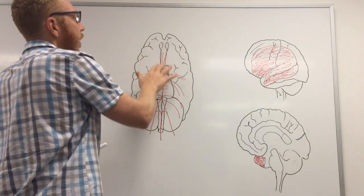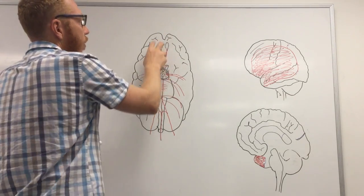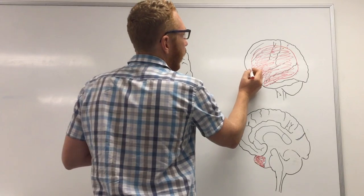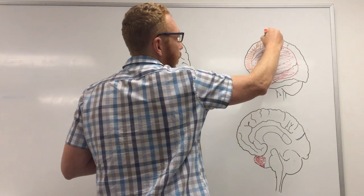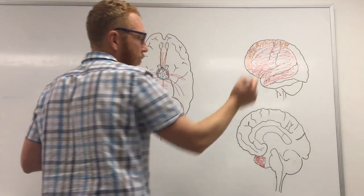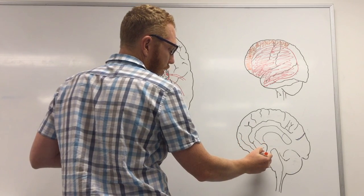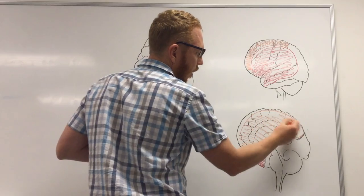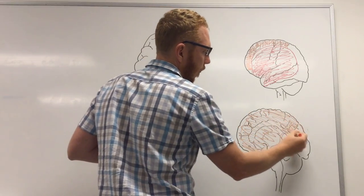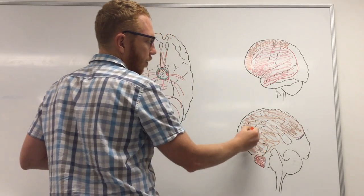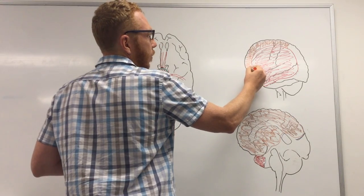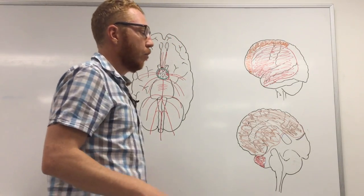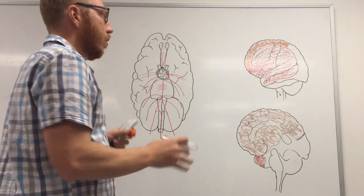The anterior cerebral vessels run forward to the frontal lobe, with a communicating branch between them. The ACA supplies the medial surface of the frontal and parietal lobes — the watershed area along the midline. Deficits from an ACA stroke tend to affect sensory and motor function more in the legs and perineum, so patients may have problems with urination, defecation, or leg movements, as well as behavioural changes.